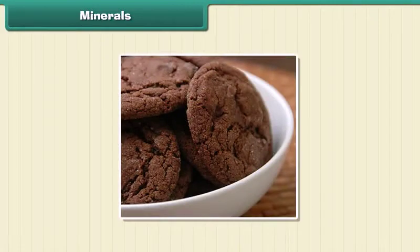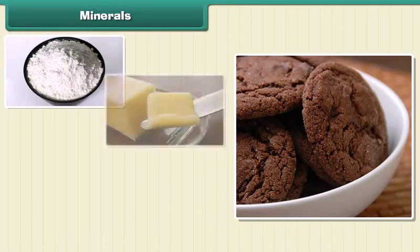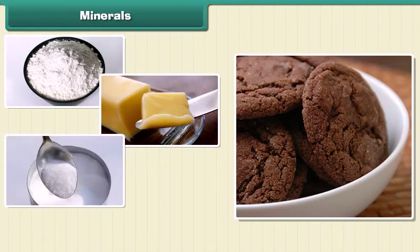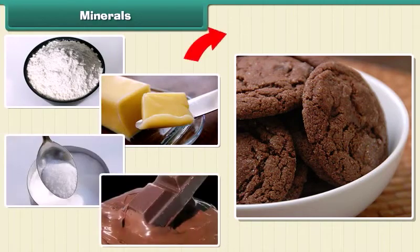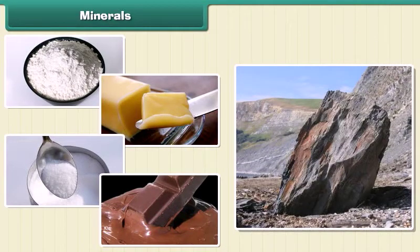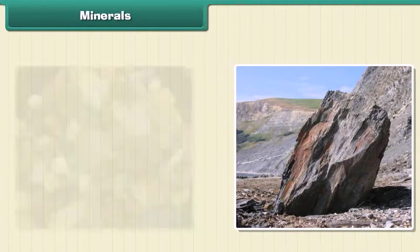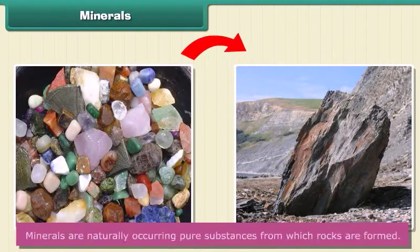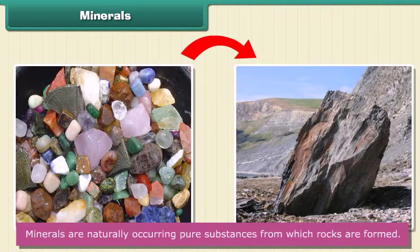Think of a chocolate cookie as a rock. The cookie is made of flour, butter, sugar, and chocolate. The cookie is like a rock and the flour, butter, sugar, and chocolate are like minerals. Thus, minerals are naturally occurring pure substances from which rocks are formed.